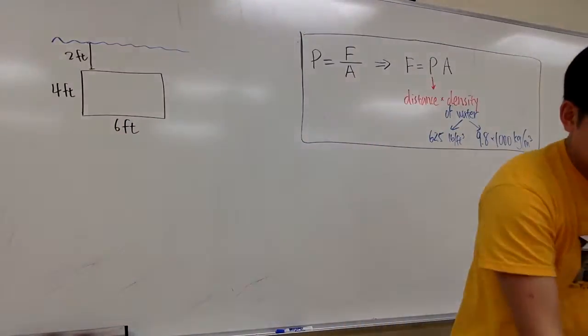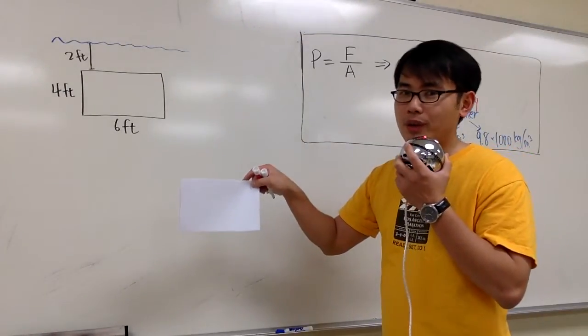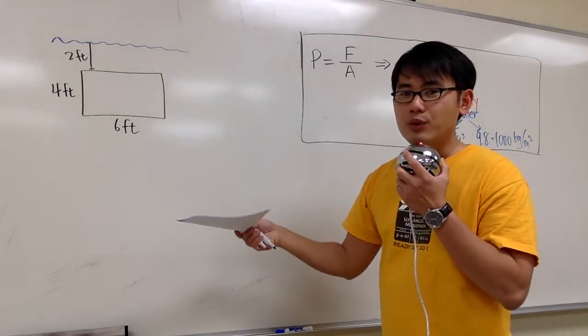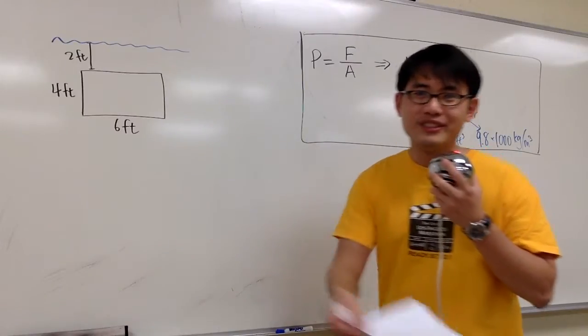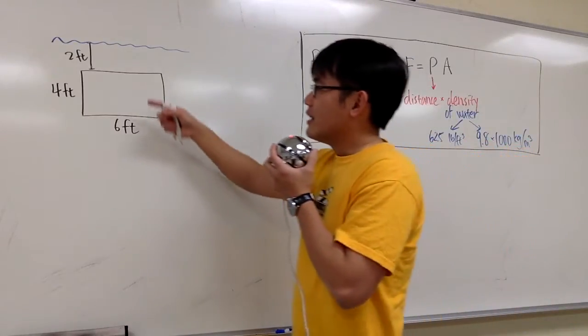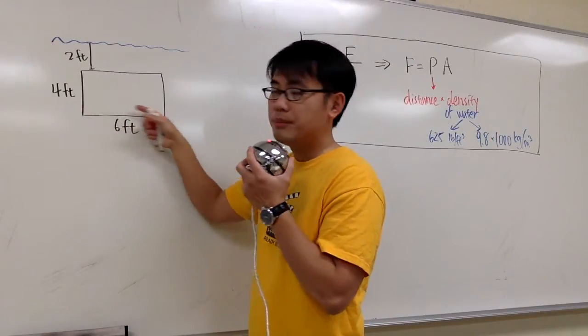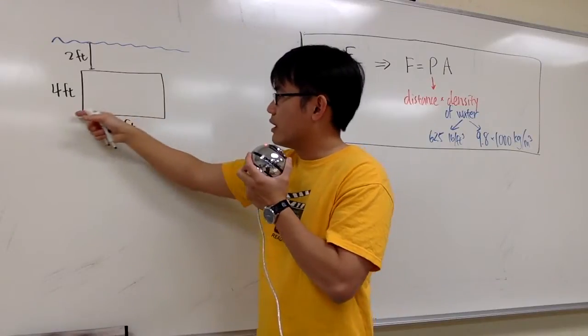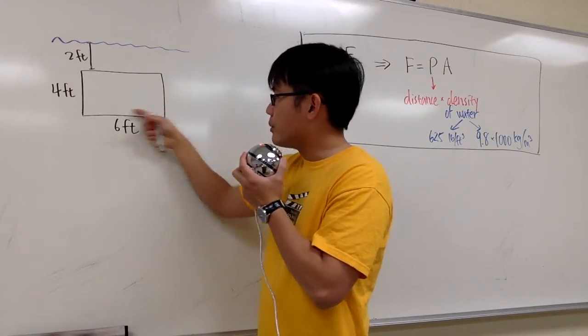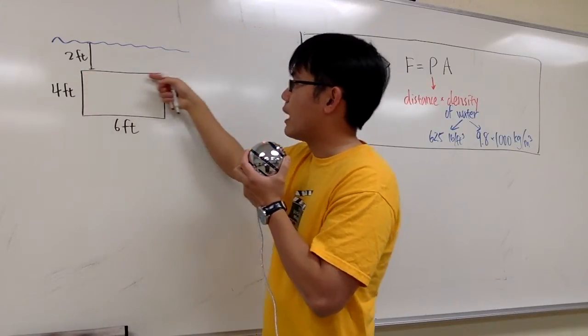Whenever we put something vertically into the water, we actually have to use integrations. If you put a plate horizontally like this, we don't need to use integrations. Because the pressure changes depending on how deep down you are underneath the water. So the deeper you are, the bigger the pressure will be. Down here, the pressure will be bigger than when you are up here.